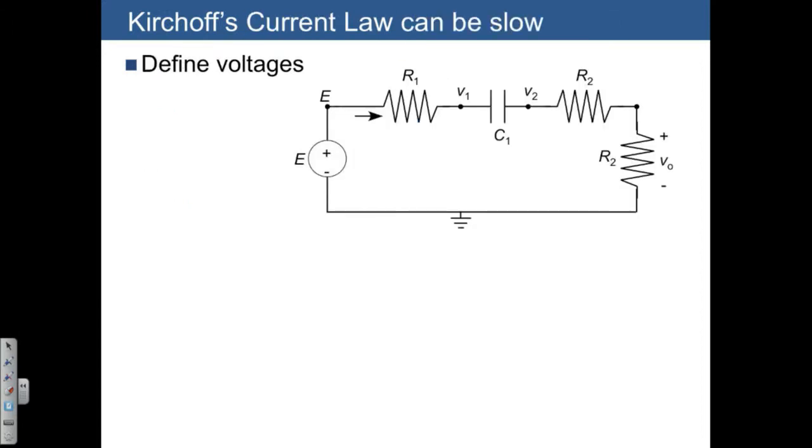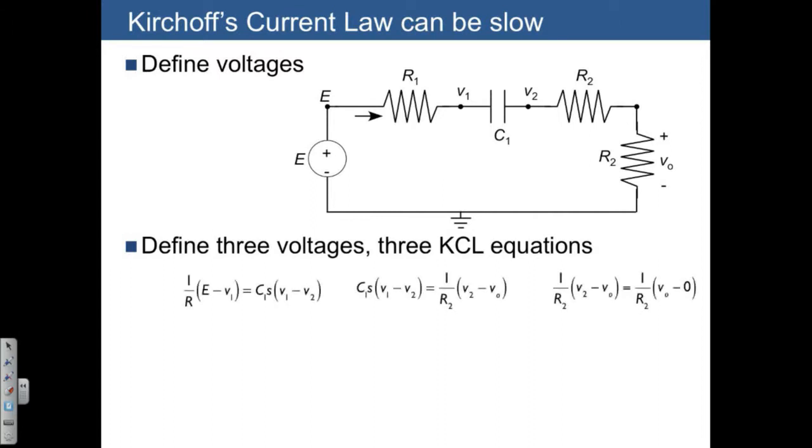This is an example of a system where Kirchhoff's current law can be kind of slow. We might have to define several voltages, say V1 and V2, that are just going to be eliminated later on. So we have V1, V2, and VO. We'll end up with three Kirchhoff's current law equations. They might look something like this, and then we have to combine them. This can all be done, but it might take a few minutes.